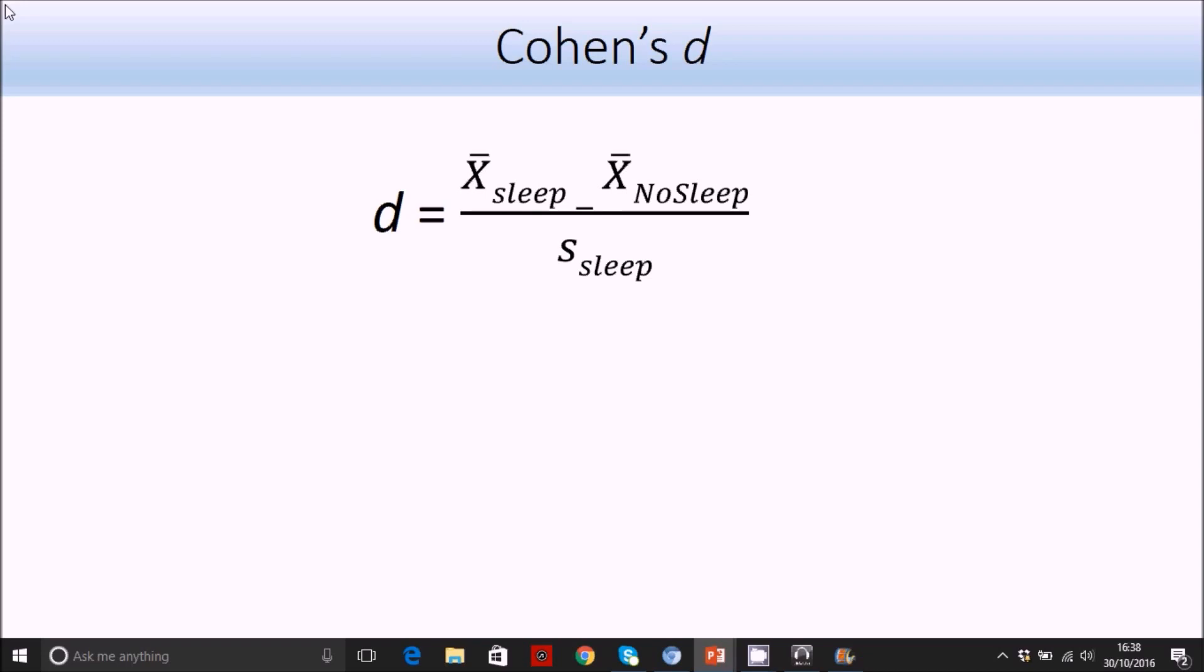In terms of calculation of Cohen's D, if you've got unequal standard deviations between the groups or if you've got no obvious control group, then there are methods to calculate Cohen's D which take into account the pooled standard deviation. So they'll take into account the standard deviations from both groups. We'll keep things simple, but just to say there are several resources online where you can calculate Cohen's D from the test statistics. Cohen's D is essentially a measure of effect size that's in standard deviation units.